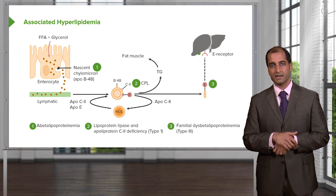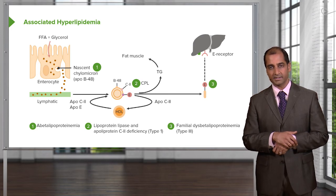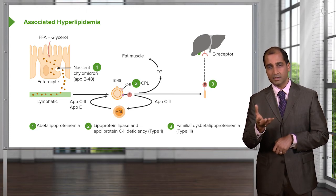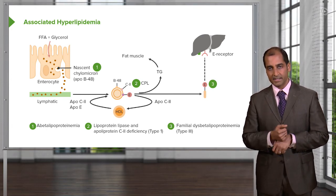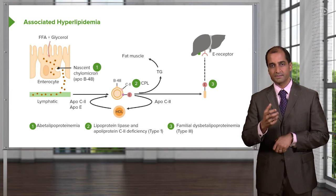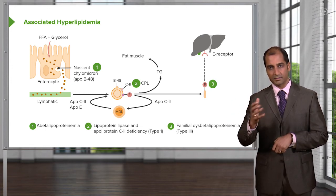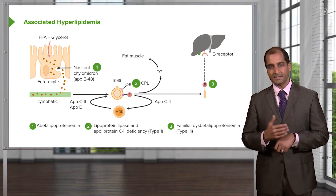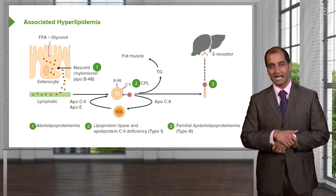Number two is CPL — capillary lipoprotein lipase. The capillary lipoprotein lipase is going to take the triglyceride from your chylomicron and extract it to fat and muscle. Now what do you have? An empty chylomicron — it has empty nest syndrome. The triglyceride has been removed by capillary lipoprotein lipase. This is the second lipase from biochemistry that comes into play.